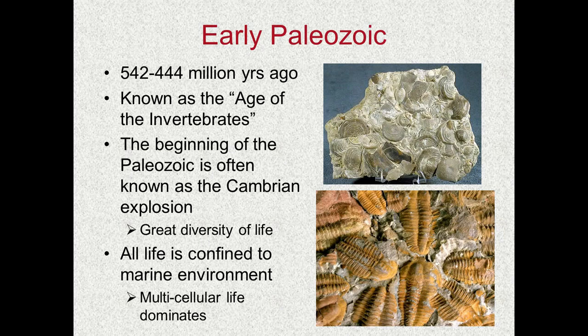As we go through this journey, I'm going to let you know where we are in geologic time, but I do not expect you to memorize these dates — just letting you know relative to everything where we are in Earth's history. The early Paleozoic stretches from 542 million years ago to about 444. This is known as the age of the invertebrates — the dominant life at this time. An invertebrate is an animal or organism without a backbone. Today, common invertebrates include clams, mussels, squid, and jellyfish.